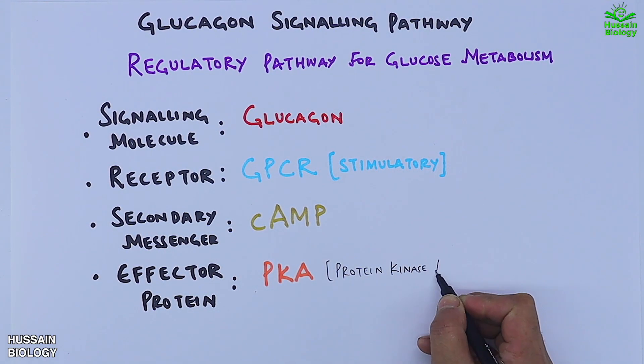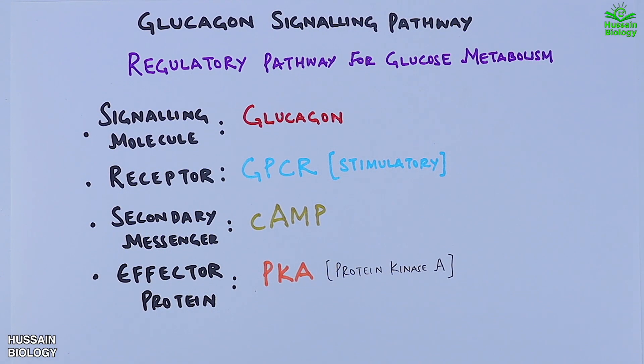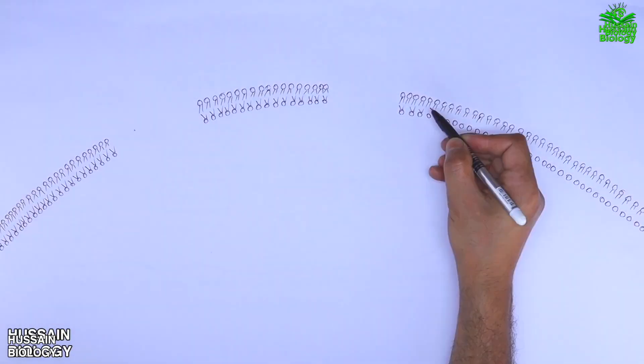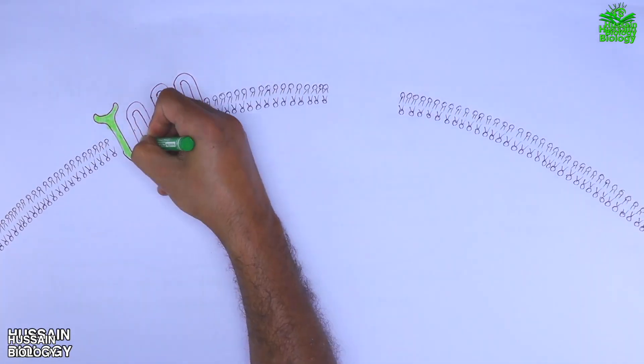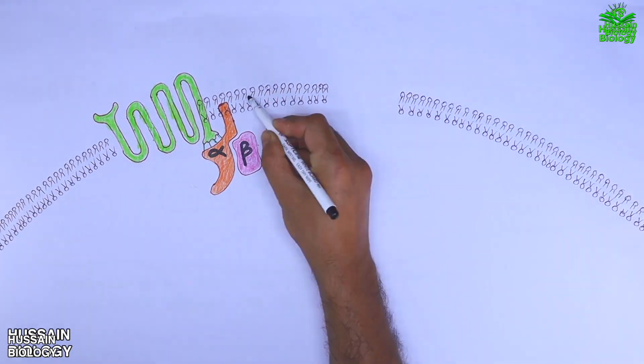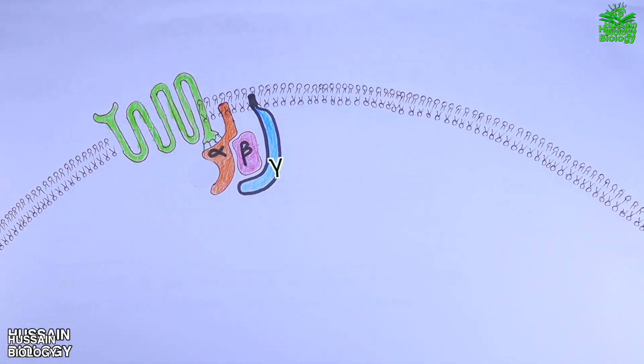Now let's get to the pathway directly. Here in this diagram we can see the plasma membrane of the cell having GPCR receptor on it. Then we can see GPCRs are coupled to G proteins in the intracellular side as shown in the diagram, which consists of three subunits: alpha subunit, beta subunit, and gamma subunit.